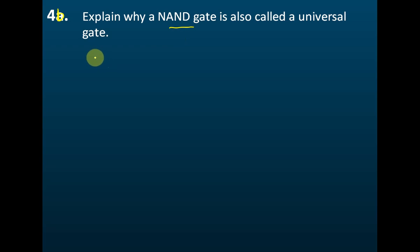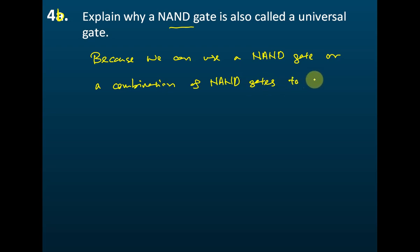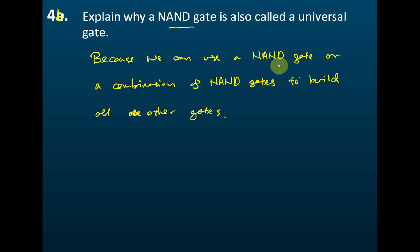So the answer is: because we can use a NAND gate, or a combination of NAND gates — sometimes you can just use one NAND gate to build other gates, or sometimes you need a combination of NAND gates to build all the other gates. That's the reason a NAND gate is also called a universal gate.